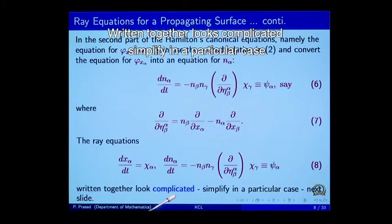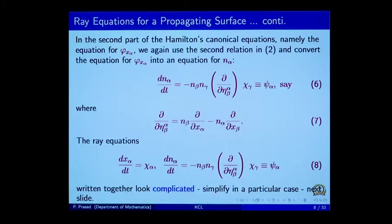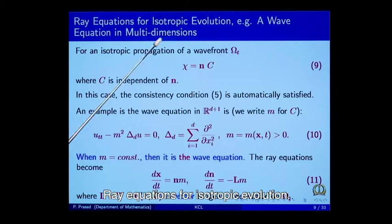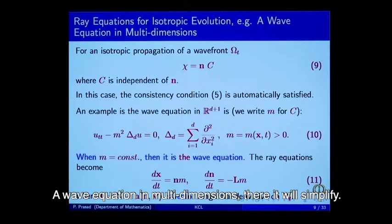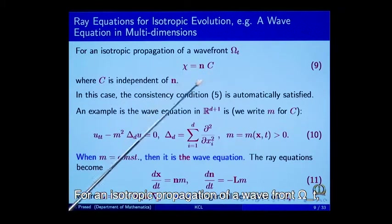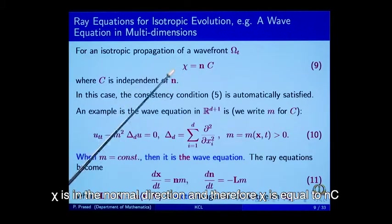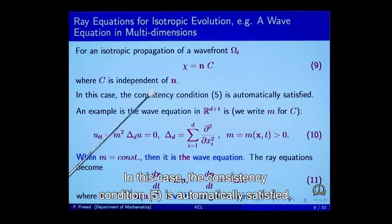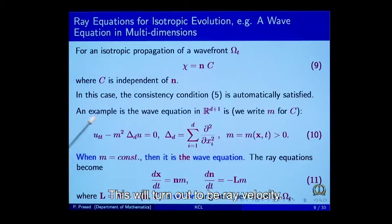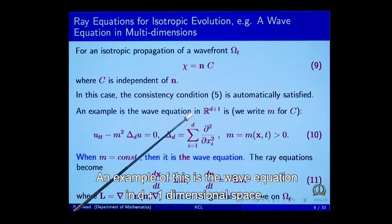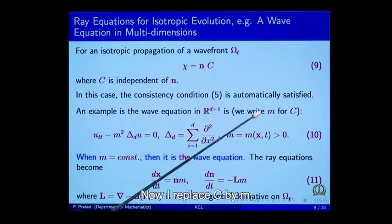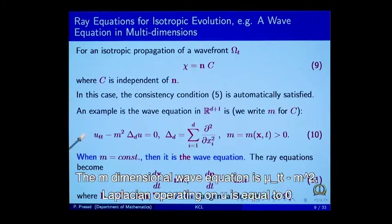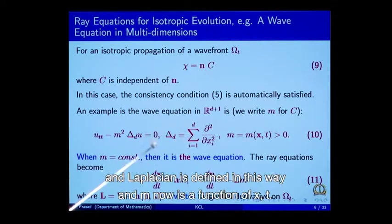Ray equations for isotropic evolution — a wave equation in multidimensions. For an isotropic propagation of a wave front omega t, chi is in the normal direction: chi = n times c, where c is independent of n. This is the definition of isotropic propagation. In this case, the consistency condition is automatically satisfied. An example of this is the wave equation in (d+1)-dimensional space. Replacing c by m, the m-dimensional wave equation is u_tt minus m^2 times the Laplacian of u equals zero, where m is a function of x and t. When m is constant, this becomes the standard wave equation.